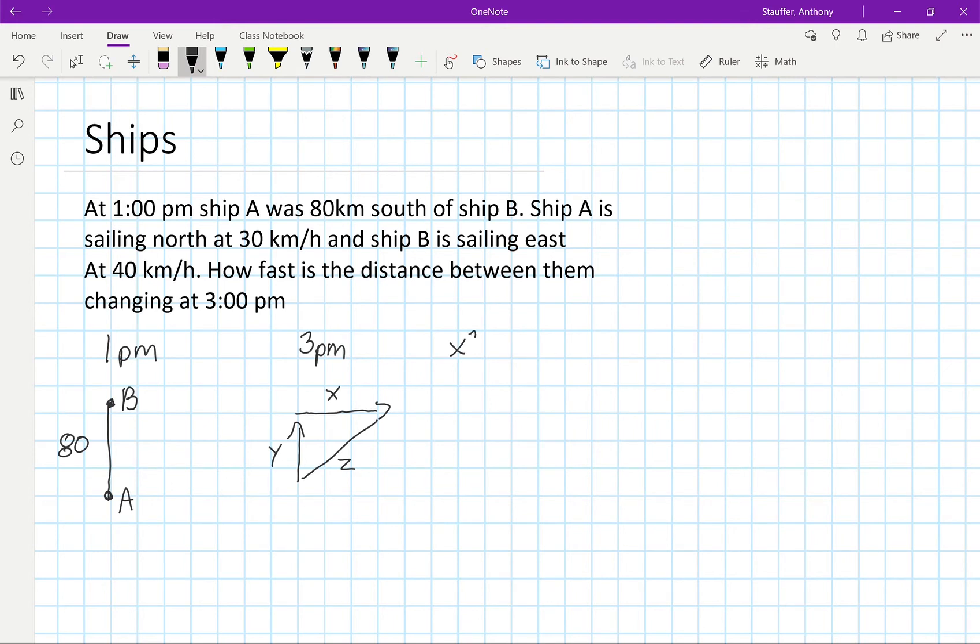We have x² + y² = z². I take the d/dt of this, and that gives me 2x(dx/dt) + 2y(dy/dt) = 2z(dz/dt).